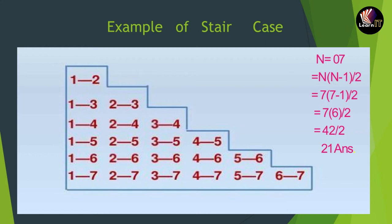The formula for finding the total number of matches in the staircase method is N(N−1)/2. For example, with 7 teams: 7 × (7−1) / 2 = 7 × 6 / 2 = 42 / 2 = 21. So the total number of matches these 7 teams will play is 21, and this can be calculated according to the formula shown on the right side of the screen.